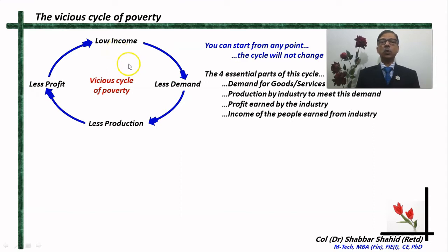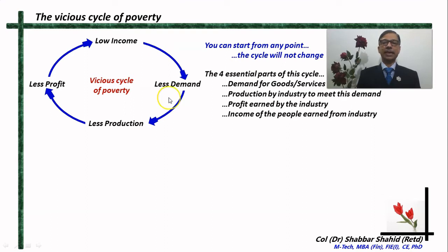Let me explain. You can look at it from any angle — whether at the national level, the country level, or the smallest level. Consider Maya Devi who was selling fruits. Even at her level, the concept remains the same. There has to be a demand for goods and services. Maya Devi will bring fruits from the wholesale market only if there is a demand. If there is no demand, she will not get it from the market, and industries — farmers — will not produce fruits, vegetables, and grains.